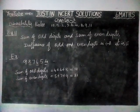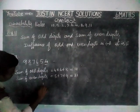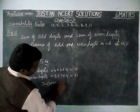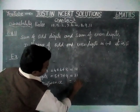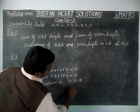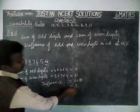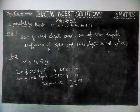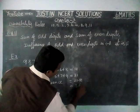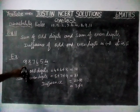Now we will check the difference between these two. Difference is equal to 21 minus 18, which equals 3. This 3 is not divisible by 11. Therefore, the given number 987654 is not divisible by 11.